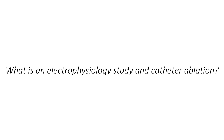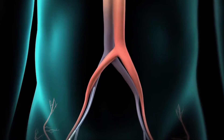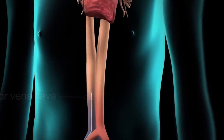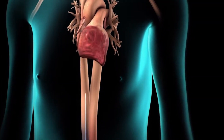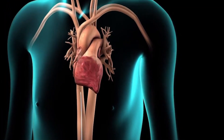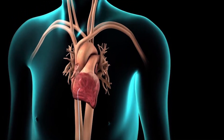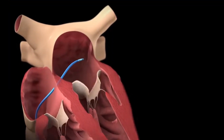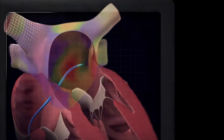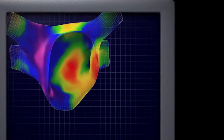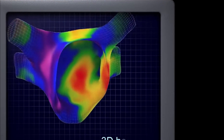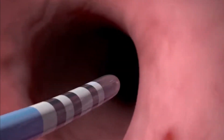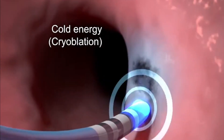An electrophysiology study is a test to see if there is a problem with your heart rhythm and to find out how to fix it — also called an EP study. A catheter ablation procedure is sometimes done at the same time. This procedure destroys or ablates small areas of your heart that are causing the rhythm problem. The doctor puts plastic tubes called catheters into blood vessels in your groin, arm, or neck, then uses an x-ray machine to guide long flexible wires through the tubes into your heart to record its electrical signals. If ablation is needed, the doctor can destroy a small part of your heart tissue, usually done with radio waves.